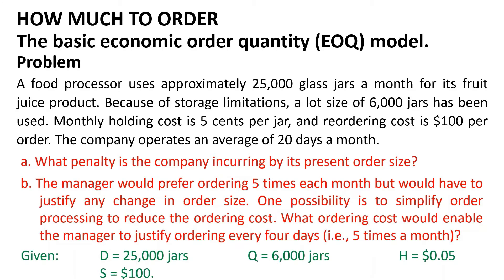The given values are: monthly demand D equals 25,000 jars, order quantity Q equals 6,000 jars, carrying cost H equals 5 cents, and order cost S equals $100.